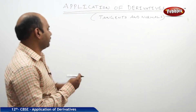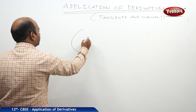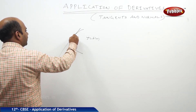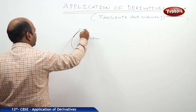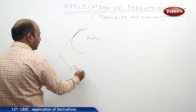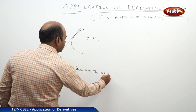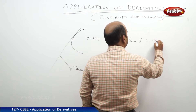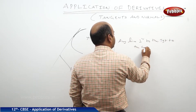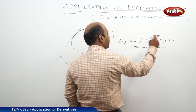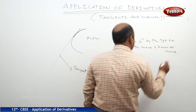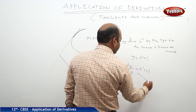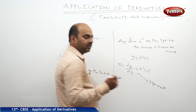What do you mean by a tangent? If I take a curve, call that curve as y = f(x). If I draw a straight line in such a way that it touches the curve at a single point, then you can call this straight line the tangent to the curve. Any line perpendicular to the tangent to the curve is known as the normal. If y = f(x) is our curve, then dy/dx = f'(x) represents the slope of the tangent of the curve.